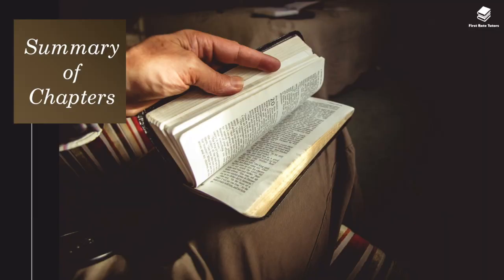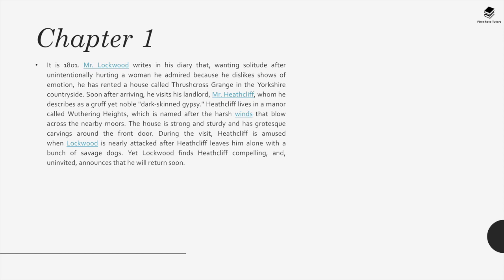Chapter 1. It is 1801. Mr. Lockwood writes in his diary that, wanting solitude after unintentionally hurting a woman he admired — because he dislikes showing emotion — he has rented a house called Thrushcross Grange in the Yorkshire countryside. He visits his landlord Mr. Heathcliff, whom he describes as a gruff yet noble dark-skinned gypsy. Heathcliff lives in a manor called Wuthering Heights, named after the harsh winds that blow across the nearby moors. The house is strong and sturdy with grotesque carvings around the front door. Heathcliff is amused when Lockwood is nearly attacked by savage dogs. Yet Lockwood finds Heathcliff compelling and announces he will return soon.